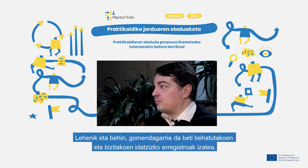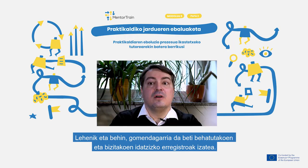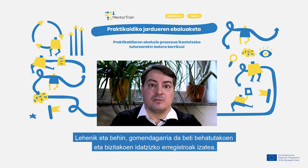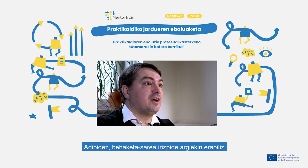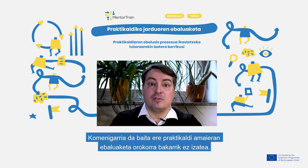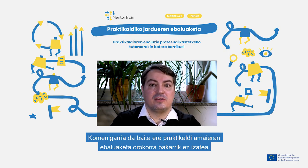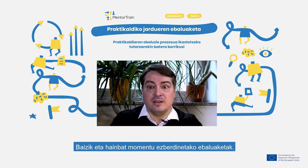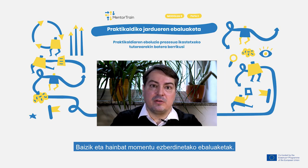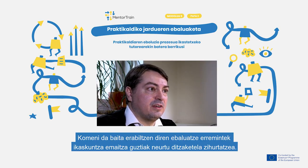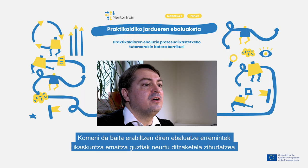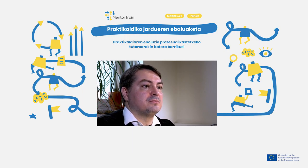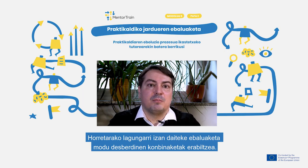Firstly, it is always advisable to keep a written record of your observations and assessment — for example, by using an observation grid with clear criteria. It would also be useful to not have just one overall assessment of the apprentice at the end of the apprenticeship, but instead to build in a number of evaluation moments. Also, make sure that the evaluation instruments you use cover all the learning outcomes. For this, it can actually help to use a combination of different evaluation methods.